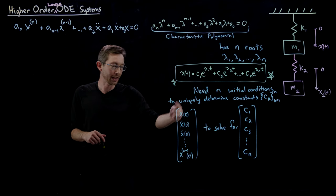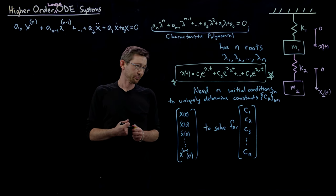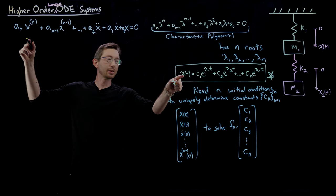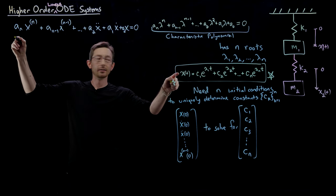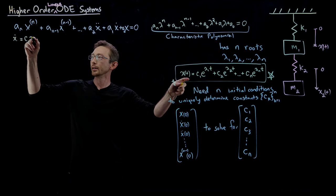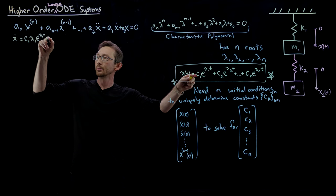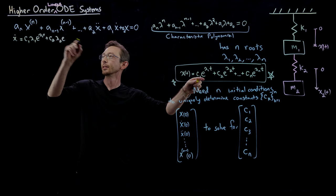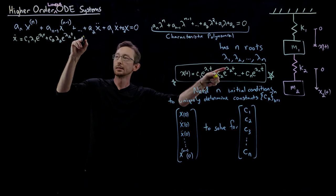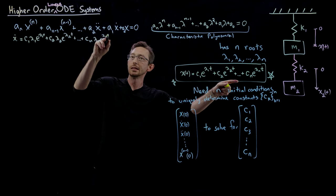This is information I have, and this is information I want. So I'm going to write down x(t) and also x-dot — which equals c₁ λ₁ e^(λ₁t) + c₂ λ₂ e^(λ₂t) + ... + cₙ λₙ e^(λₙt).